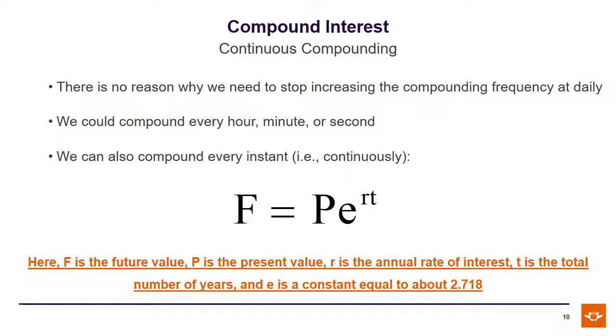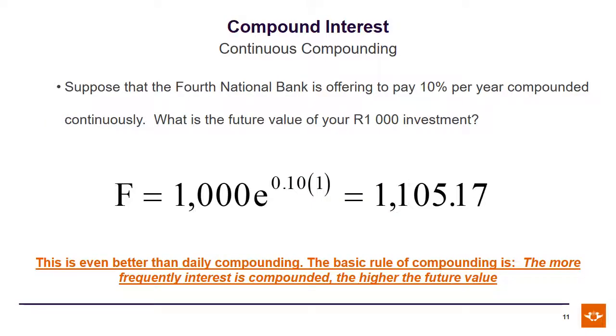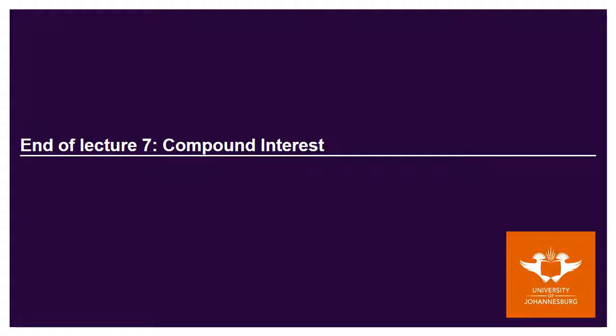Using an example, if we look at the Fourth National Bank, which is also paying 10% per year, but its compounding period is continuous, then if we have an investment of 1,000 rand, its future value turns out to be 1,105 rand and 17 cents.